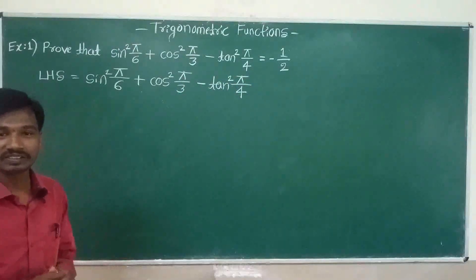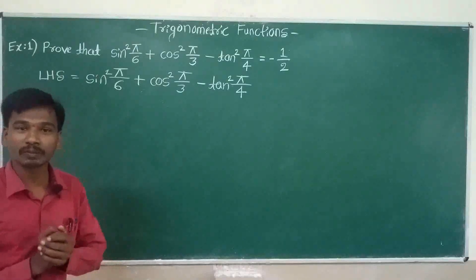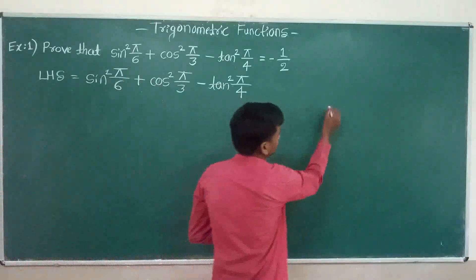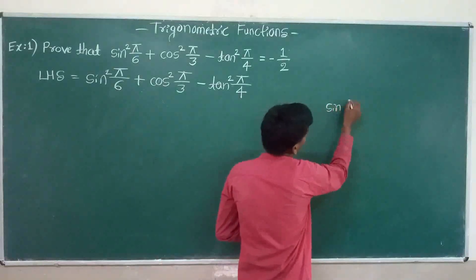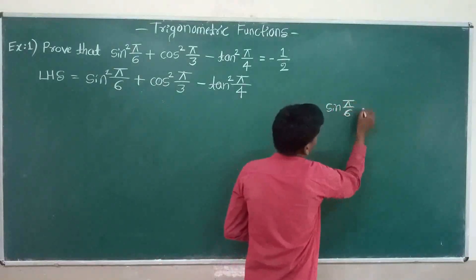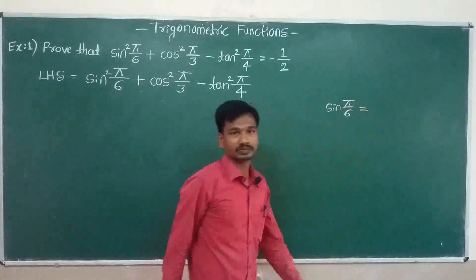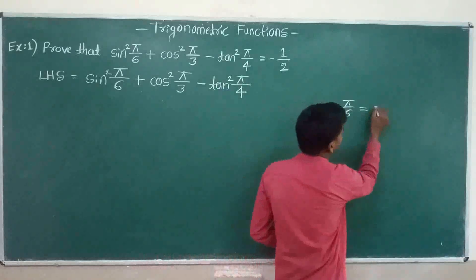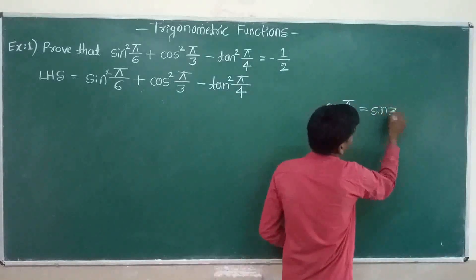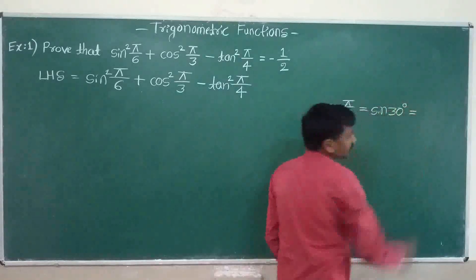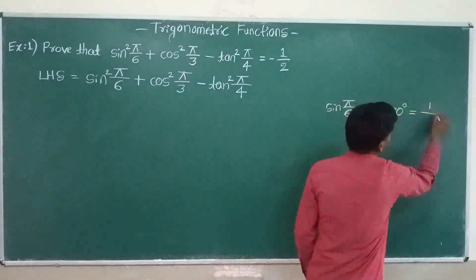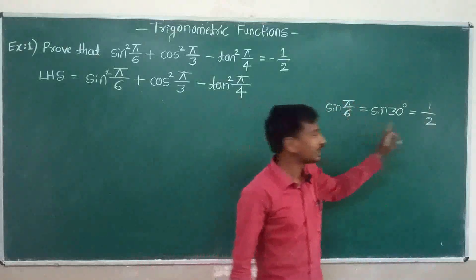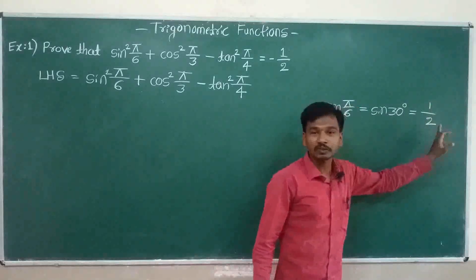We know the table values of trigonometric functions. Sin of pi divided by 6 — pi divided by 6 means 30 degrees — sin 30 degrees is equal to 1 divided by 2. So the table value of sin pi divided by 6 is 1 divided by 2.